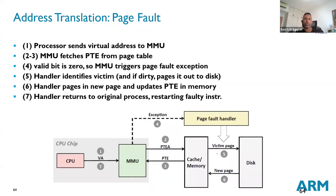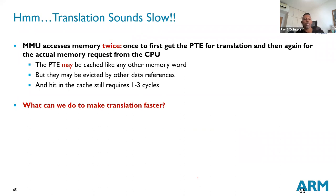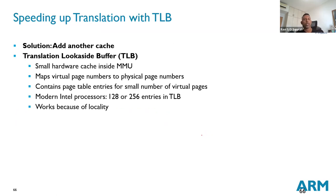If it's a page fault it's even worse — you access the page table, the valid bit is zero, you raise an exception, the OS fault handler comes in, swaps in a new page, and then starts the whole sequence again. The process can be quite tedious for a page fault, with a lot of memory accesses involved. To improve this: one optimization is a Translation Lookaside Buffer — another cache that keeps a subset of the page table inside the MMU itself.